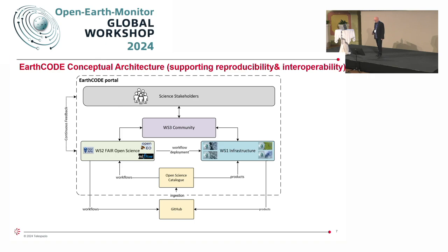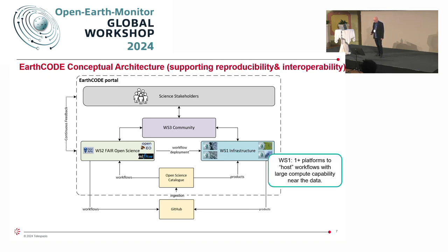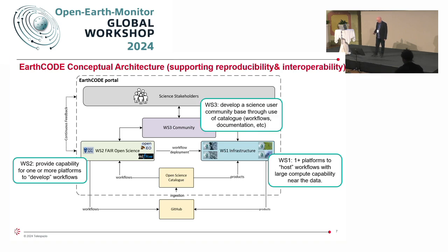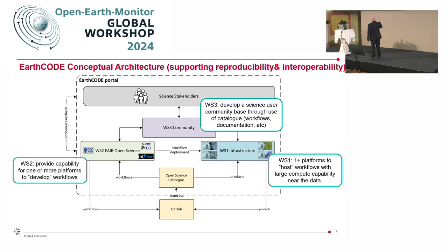Looking at the conceptual architecture behind EarthCode, there are three work streams. Workstream 1 will provide one or more platforms to host workflows with large compute capability near the data. Workstream 2 will provide capability for one or more platforms to develop workflows that can then be executed on Workstream 1. Workstream 3 will help develop a science user community through the catalogue and work with the community, but also help identify future needs for EarthCode. The output from Workstream 2 — experiments — can be published through GitHub and once accepted moved into the open science catalogue. The same workflows can also be deployed to the Workstream 1 infrastructure.